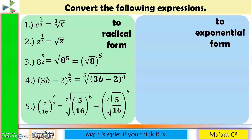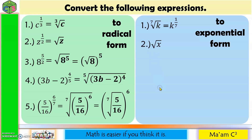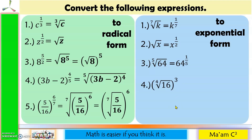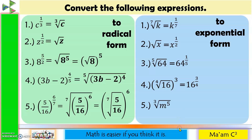Now let us convert the following to exponential form. Number 1: the 7th root of k. Since 7 is the index, it becomes the denominator, and since no exponent is written on k, it is understood to be 1, giving k raised to 1 over 7. Number 2: the square root of x. The root is understood to be 2, so this equals x raised to 1 half. Number 3: the 5th root of 64, giving 64 raised to 1 over 5. Number 4: the quantity 4th root of 16, raised to the 3rd power. The index becomes the denominator and the exponent becomes the numerator, giving 16 raised to 3 fourths. Number 5: the cube root of m to the 5th power, giving m raised to 5 over 3.